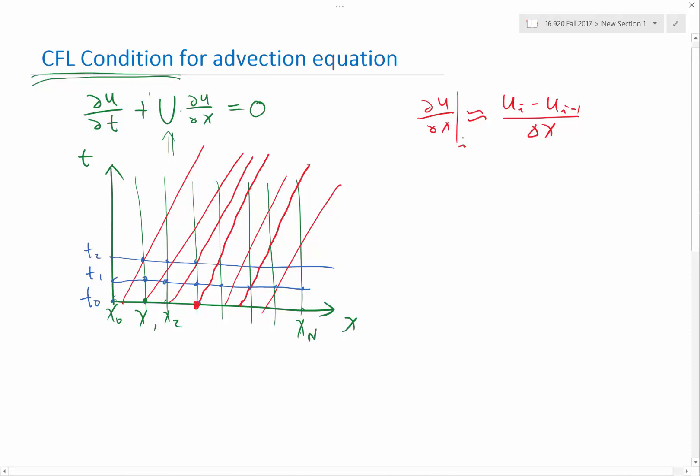And if I perform forward Euler, that means I'm going to approximate du/dt as u at a time step of n plus 1 minus a time step of un divided by delta t. Combine them together. What I get is u of n plus 1 at i minus u of n at i over delta t plus big U times u of i at n minus u of i minus 1 at n over delta x is equal to 0. So this is my scheme. This is my space time scheme.